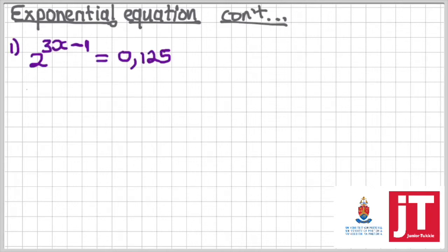We move on to the first question, where we're required to solve for x, having been given 2 to the power 3x minus 1 is equals to 0.125.